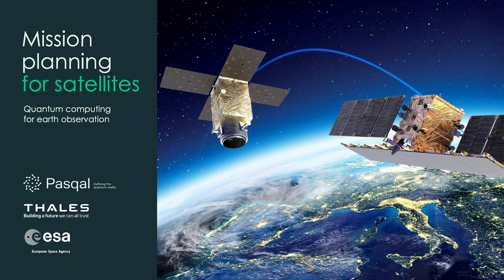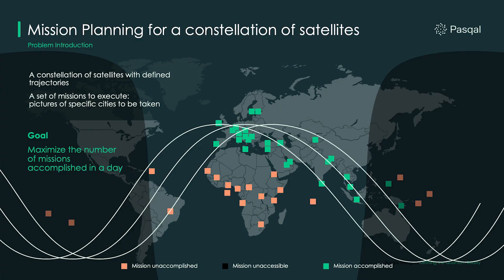The problem we are interested in today is planning missions for satellite constellations. This use case was co-developed by Thales and Pascal in the scope of the quantum computing for earth observation study. We have at our disposal multiple satellites orbiting around Earth, each containing an observation instrument — a sort of camera. Each satellite has a well-defined trajectory based on its orbit, and during the day it will cover a certain region of Earth.